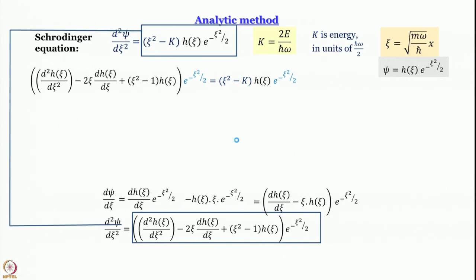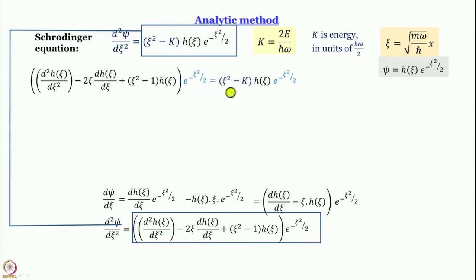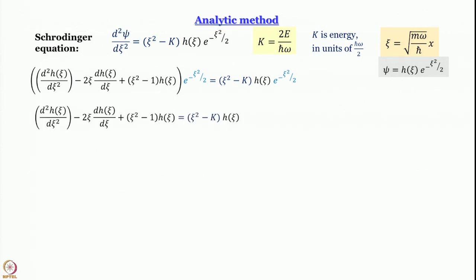Writing the Schrödinger equation gives d²/dξ² of h minus 2ξ times the first derivative of h with respect to ξ, plus ξ² minus 1 times h, all multiplied by the Gaussian function in ξ, equals ξ² minus k times h times the same Gaussian function. The Gaussian functions are shown in blue because they appear on both sides as factors and cancel each other.